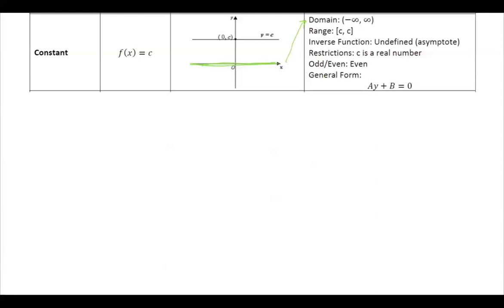The range of the constant function is a single value — you can write the range as the closed interval containing just c, or say the range is the set including that single number. The inverse function is not defined for this function because it's not one-to-one. This function is an even function. In general form you have ay plus b equals 0. It's a flat function with slope equal to 0, which is why you don't see any x.